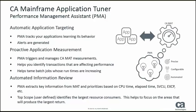PMA is going to allow you to track your applications by learning their behavior over time. PMA tracks the applications as they execute and establishes a baseline. Based on your thresholds, alerts will be generated. PMA can then trigger a CA MAT measurement as a result of those thresholds. It's going to help you identify transactions that are impacting overall performance and identify batch jobs whose run times are increasing. PMA extracts key information and prioritizes based on CPU time, elapsed time, service units, and EXCPs.